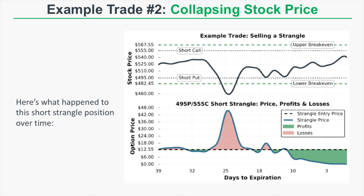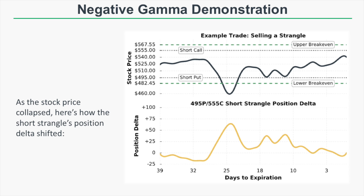Now let's look at how the position delta of the short strangle changes as the stock price changes, to help understand what negative gamma means. On the bottom part of the graph we're looking at the position delta — the combined delta of the short call and short put multiplied by 100. The position delta for one strangle can range from negative 100 (equivalent to short 100 shares) to positive 100 (equivalent to long 100 shares).